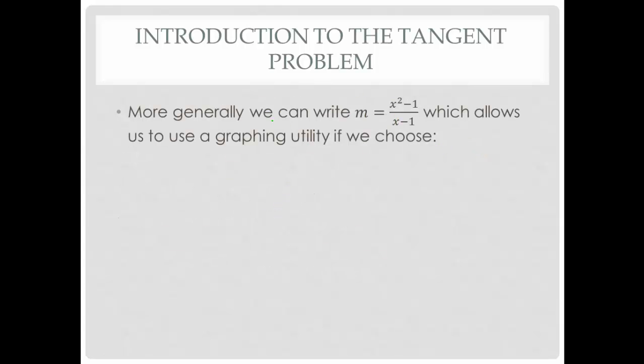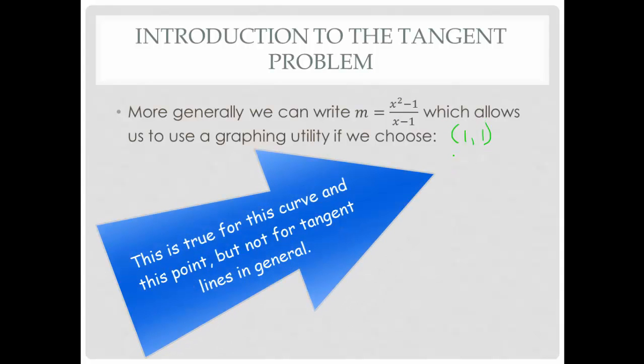Sometimes what we're interested in is doing this a little bit more generally. More generally, we can write that the slope should always be equal to (x² - 1)/(x - 1). That comes from your ordered pairs being (1,1), which is our fixed point for this specific example, and some general x value. Since this is the function f(x) = x², your y values are found by squaring your x values.